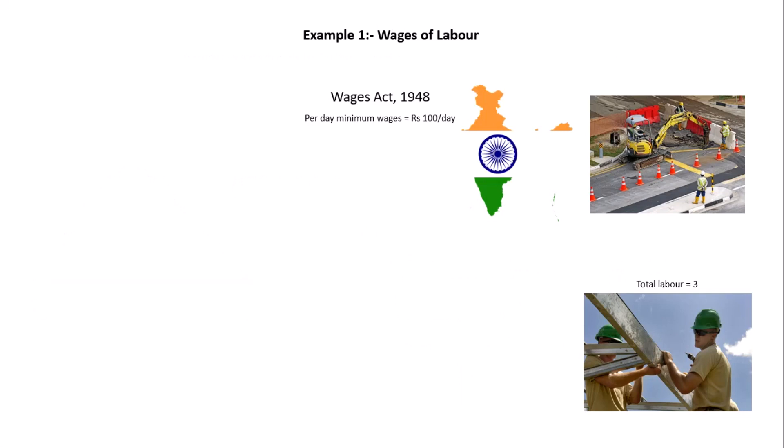In this act, what happens is the employer has to give the minimum wages to the employee or laborer for working in their office. Like in India, let's suppose 100 rupees per day. There are three laborers working in this example.